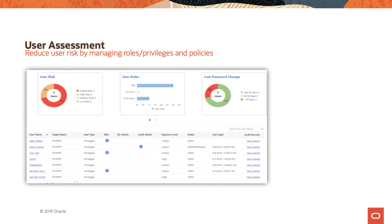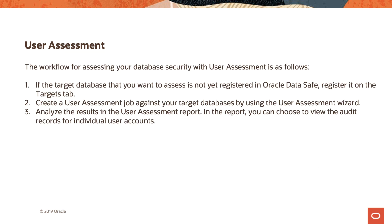Here is a screenshot of the user assessment tab in Oracle Data Safe. The workflow for assessing database security with user assessment is as follows: if the target database is not yet registered in Oracle Data Safe, register it on the targets tab. You then create a user assessment job against your target databases using the user assessment wizard. Finally, you analyze the results in the user assessment report, where you can choose to view audit records for individual user accounts.